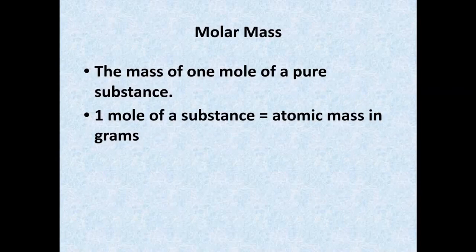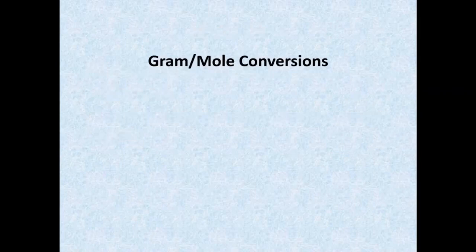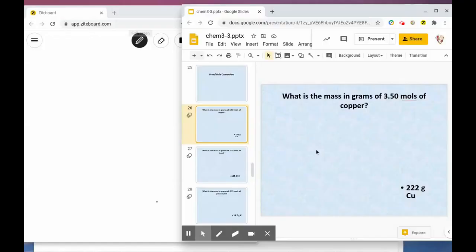So if I have one mole of carbon, I would look up the atomic mass of carbon — which is about 12.99 on the periodic table — and it would tell you the mass in grams. We're going to use that to do what are called mole-gram conversions, looking at a few sample problems converting between grams and moles.